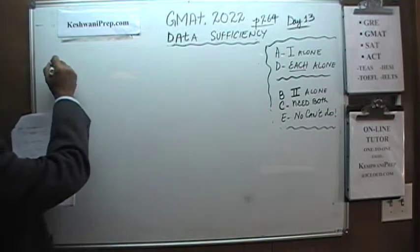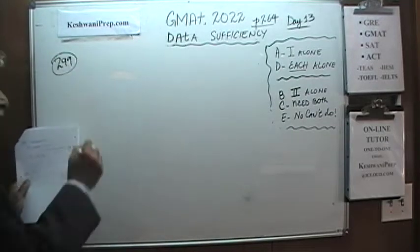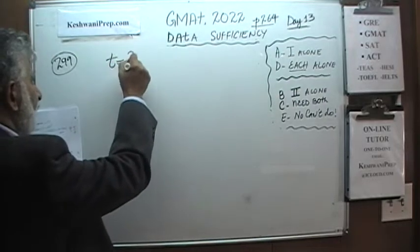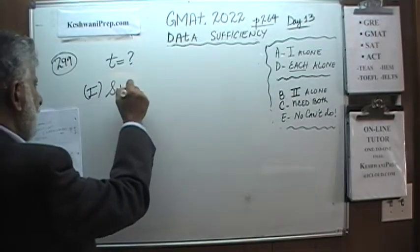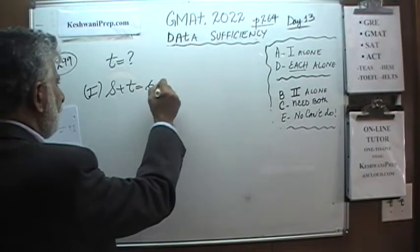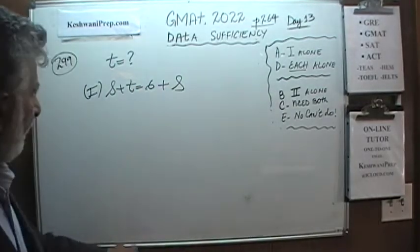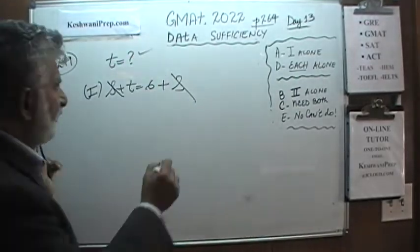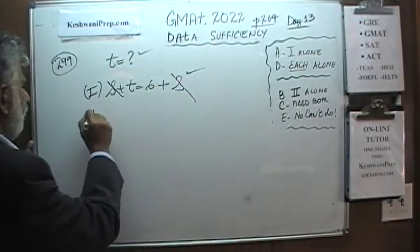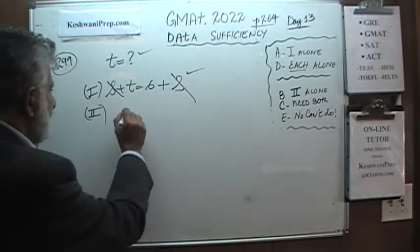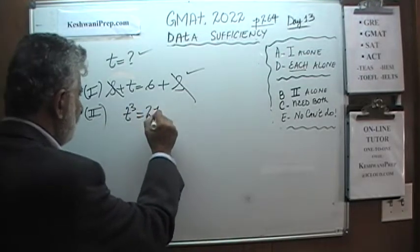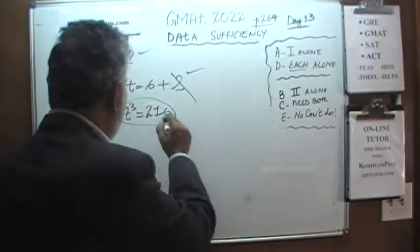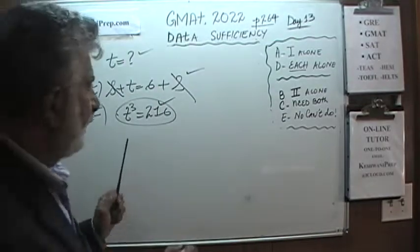Problem 299 is just as simple. The question is: how much is T? The first statement tells us S plus T equals 6 plus S. If we subtract S from both sides, we know T. The first statement is enough. The second statement tells us T cubed equals 216. If we know T cubed, we can figure out T. The second statement by itself is also enough. The answer is D.